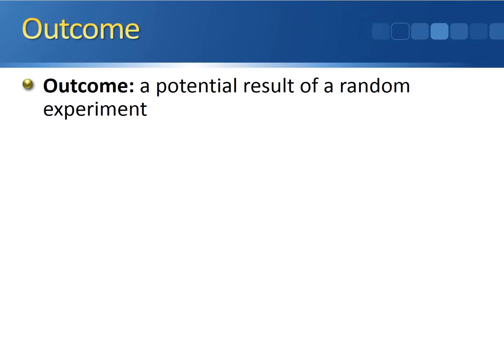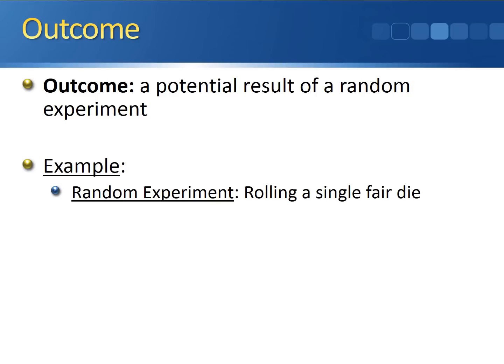An outcome is defined to be a potential result of a random experiment. So if we go back to our random experiment where we're rolling a single fair die, one possible outcome here is rolling a four. Rolling a four is one possible result of running your random experiment of rolling a single fair die.